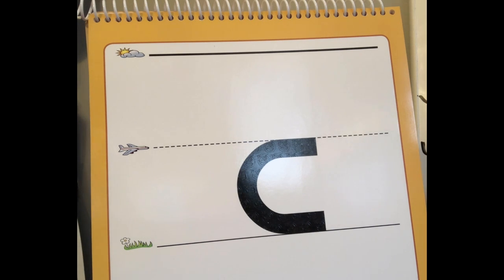C is a plain line, round letter. So that means it starts on the plain line. Can you point to the plain line with me?